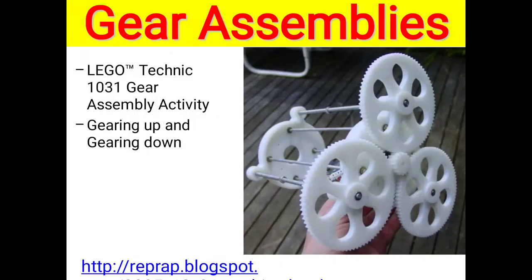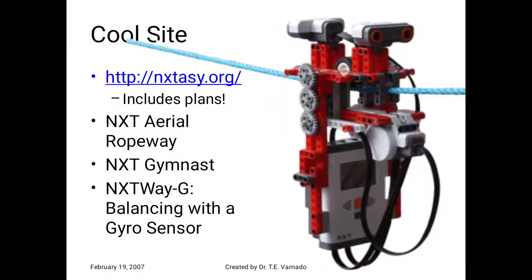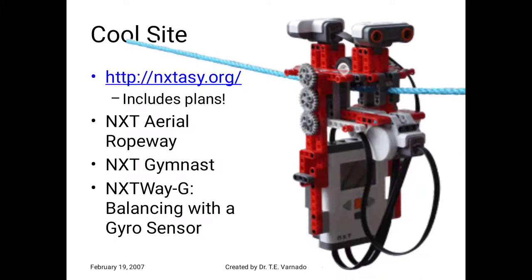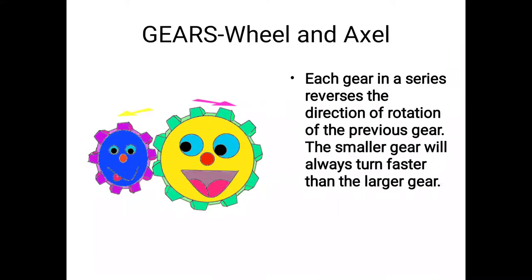Gear assemblies: LEGO Technic 1031 gear assembly activity, gearing up and down sections. You can see here the assembly with connected gears. Cool Side NXT, aerial ropeway, NXT gem side, NXT way, G balance with gyro sensor, gear wheel and axis.